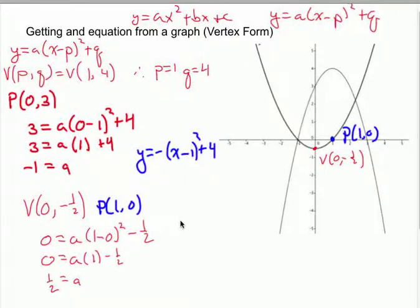So my equation is y equals 1 half x minus p. And I decided that my p-value is 0 squared minus 1 half. Or, more simplified, 1 half x squared minus 1 half. And I'm done.